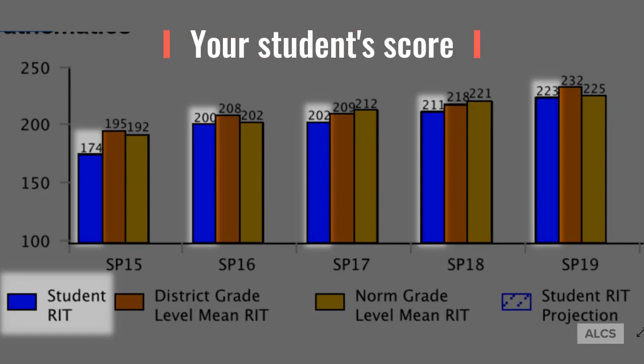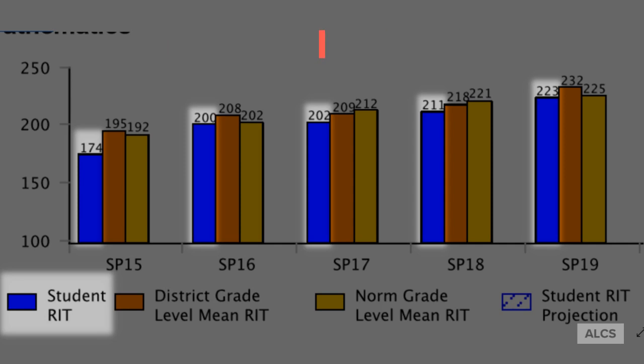The blue bars indicate your student's score on the MAP test. For example, you can see that this student in the spring of 2018 earned a score of 211 on the math test, and in the spring of 2019 this student's score improved to 223.